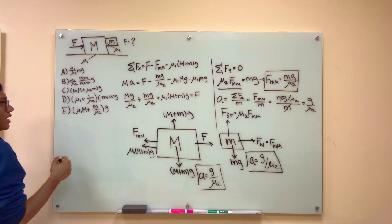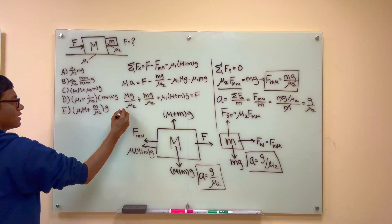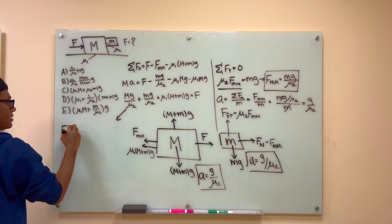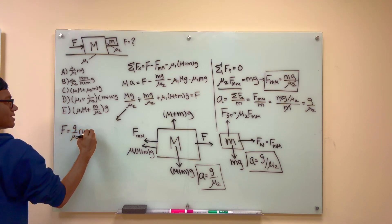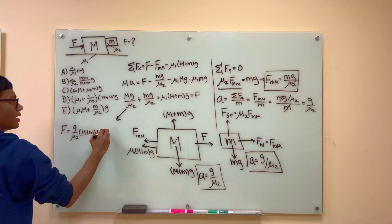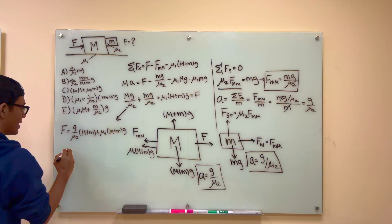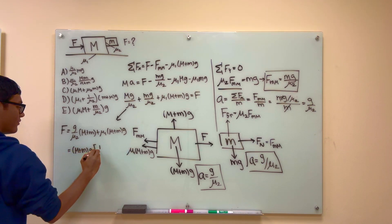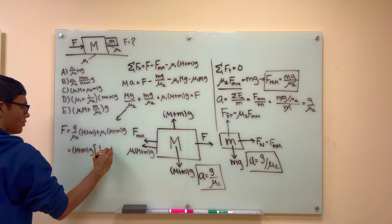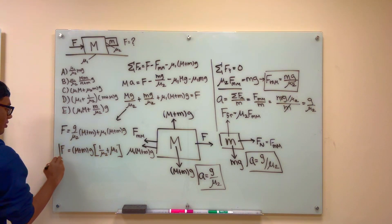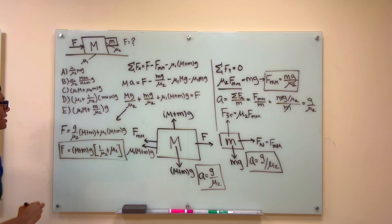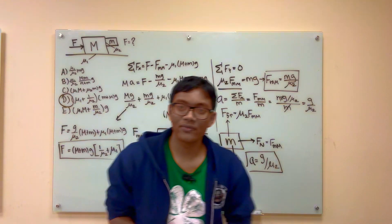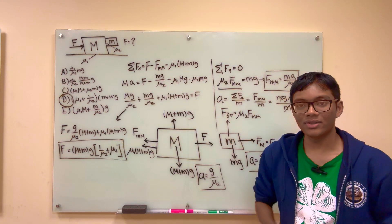Factoring out (M + m)g gives: F = (M + m)g × (1/μ₂ + μ₁). And what is that, if not choice D? That is how you solve this Physics GRE problem. We'll see you in the next one.